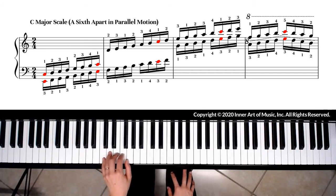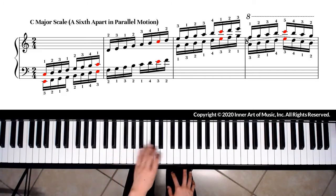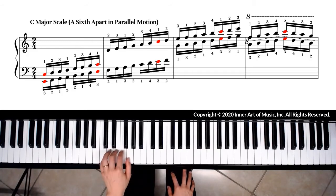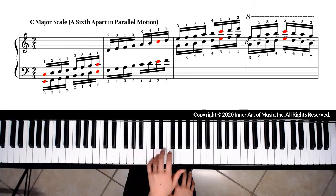For a sixth apart scale, we use the same third finger on left hand to start on note E. We play E, F, G, A, B, C, D, E and use fingerings 3, 2, 1, 3, 2, 1, 4, 3.